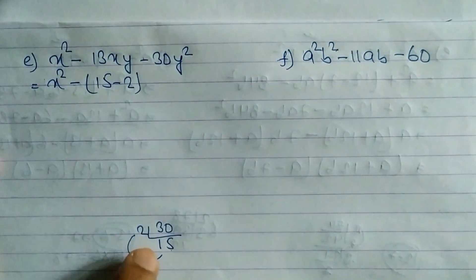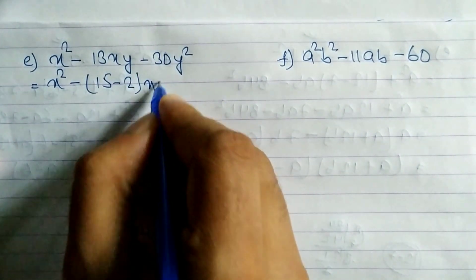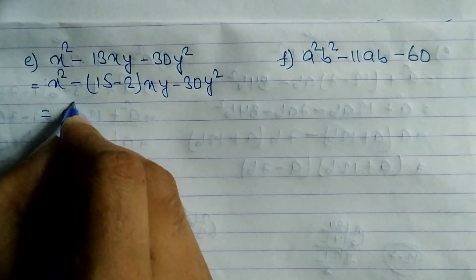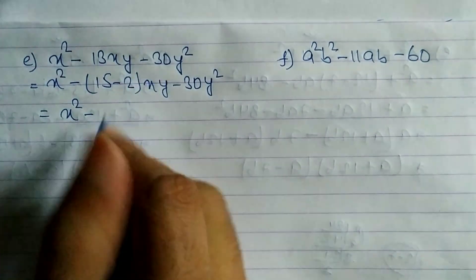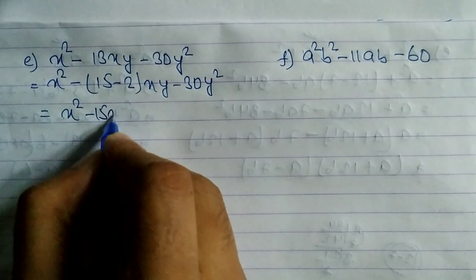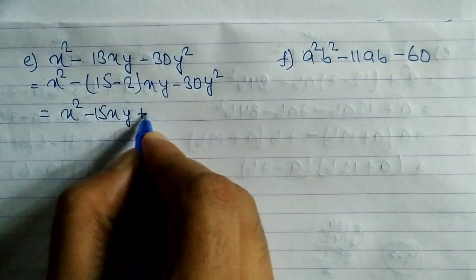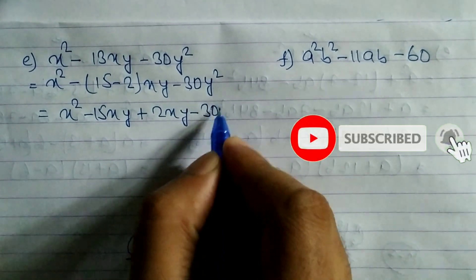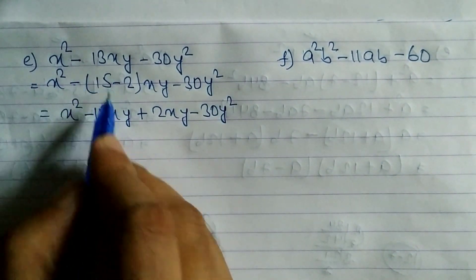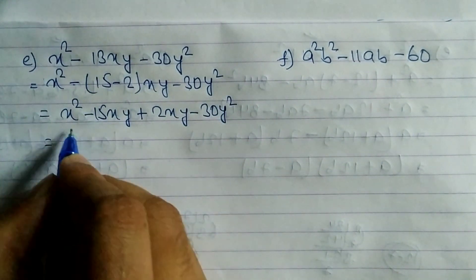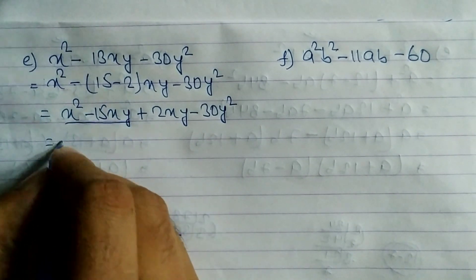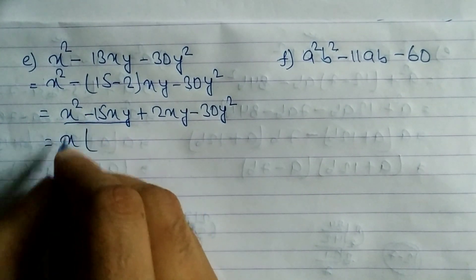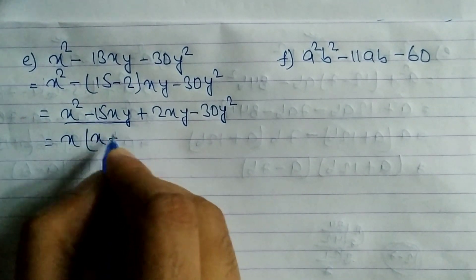We rewrite x² - 13xy - 30y² as x² - 15xy + 2xy - 30y². Opening the bracket: x² - 15xy + 2xy - 30y². From the first two terms, x is common: x(x - 15y).